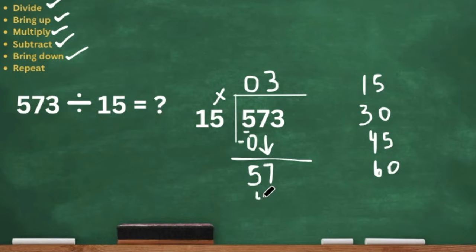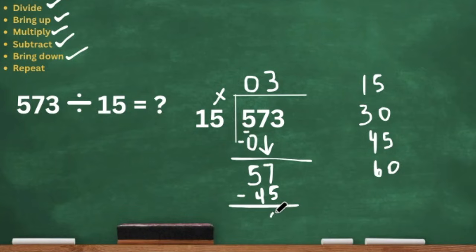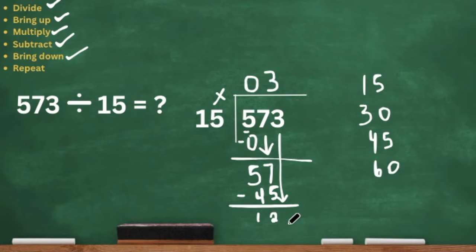So 3 times 15 is 45. We are going to subtract: 7 minus 5 is 2 and 5 minus 4 is 1, so now we have 12. But remember, we have to bring down — we still have to bring down. Now we have a 3 there, so that's 123.